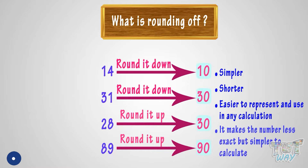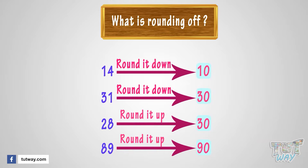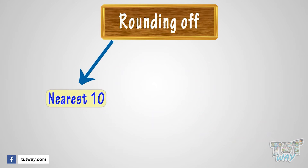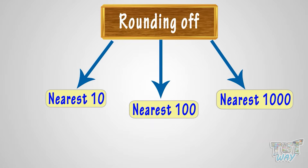It makes it no less exact, but simpler to calculate. Rounding can be to the nearest 10, nearest 100, or nearest thousand.